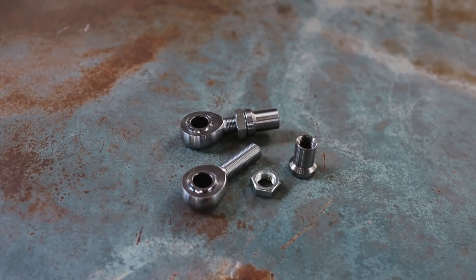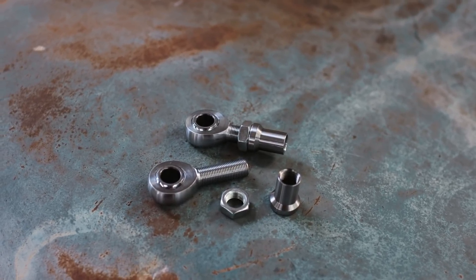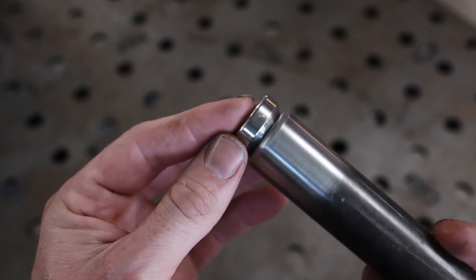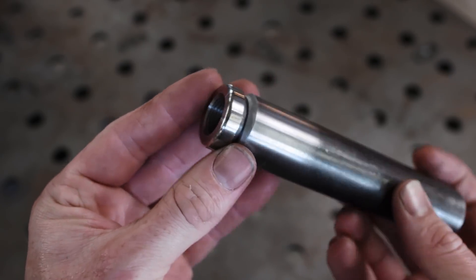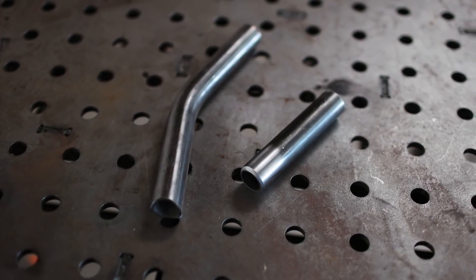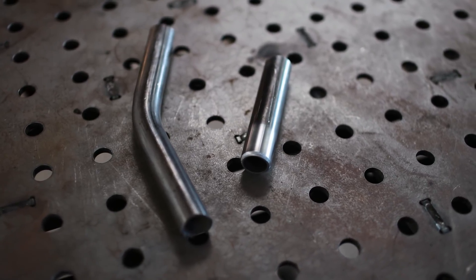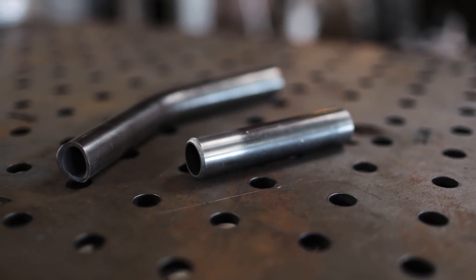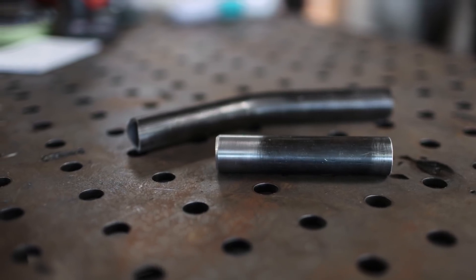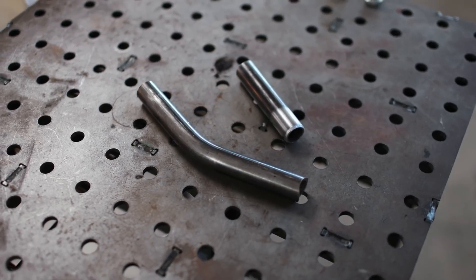We're going to start this out with our heim joints and our threaded tube bungs. I've chosen five-eighths heims due to their strength and load capacity for this project, and the tube bungs that we're using are so that we can thread those heim joints into our material, which does bring us to the material that we're going to use to build these control arms, which is one-inch, 120-wall DOM tube. Now I've covered what DOM tube is in the past, but as a refresher, it is seamed tube that has been drawn over a mandrel to make a consistent, strong piece of material. This material is going to be really good for our control arms because not only is it strong, it's very easy to work with and easy to weld, and it's going to play well with the tubing bender and the dies that I have.